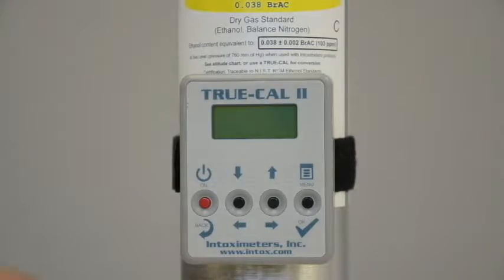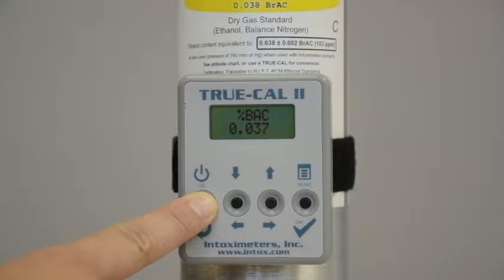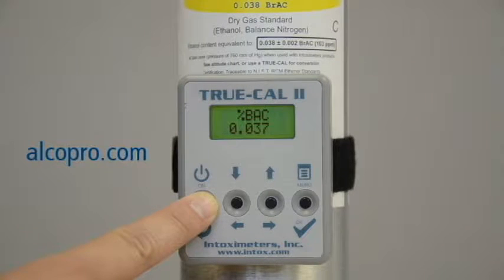You can also derive the expected value by using a TruCal device, which uses atmospheric pressure to predict the expected value of the gas. You can purchase a TruCal device at alkopro.com.